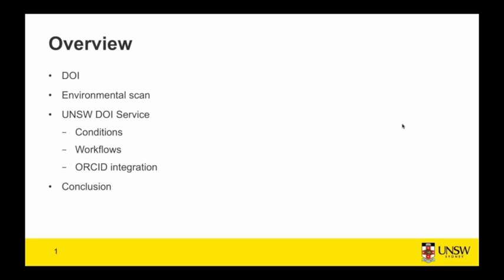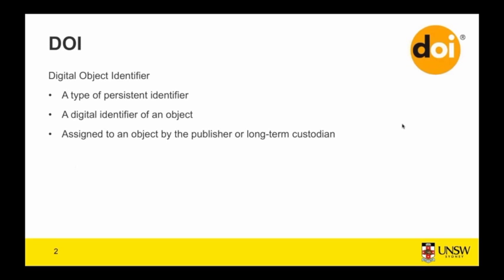I'm going to briefly cover digital object identifiers and say a few words about what they are, then take you through the environmental scan that we did to design our service, and then some of the details of the UNSW DOI service including the conditions around DOI assignment, the workflows that we're following and integration with ORCID identifiers, and a few words in conclusion.